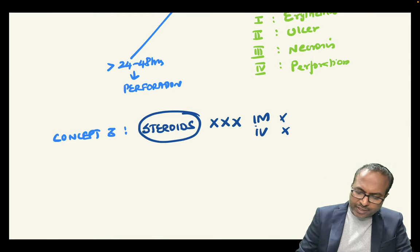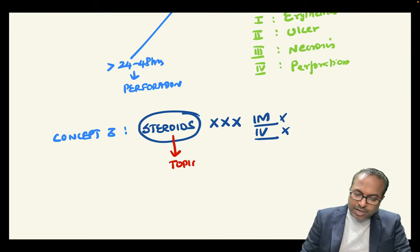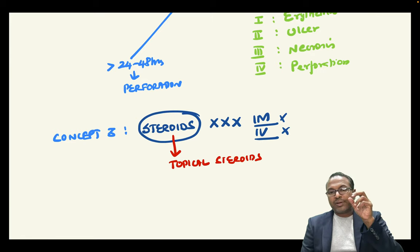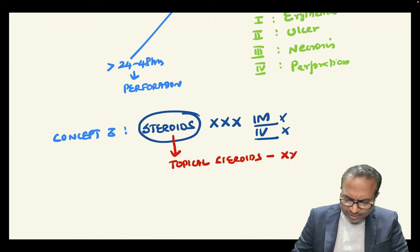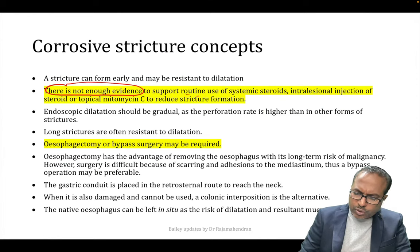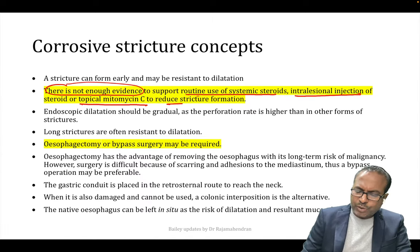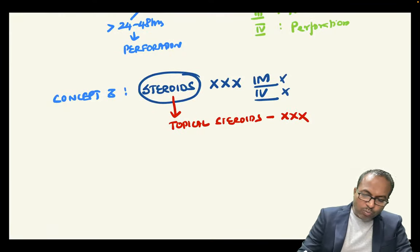Endoscopic grading determines management: grades 1 and 2 — start oral diet; grades 3 and 4 — patient on TPN; perforation — patient goes to OT. That is why grading is critical. Steroids are no more used for corrosive ingestion.